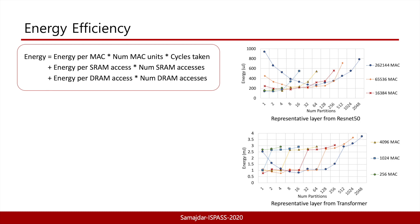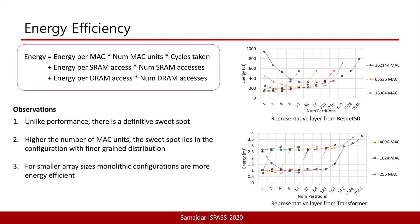However, it is not only achieving the best performance that we care about — energy efficiency is also an important design metric. We calculate energy using the access counts and cycle data from simulation and plot the energy for representative layers as we increase partitions for various MAC counts. We notice that unlike performance, there are definitive sweet spots. For fewer MAC units, monolithic configurations are found to be more efficient, while partitioned configurations are favored as compute capacity is increased.